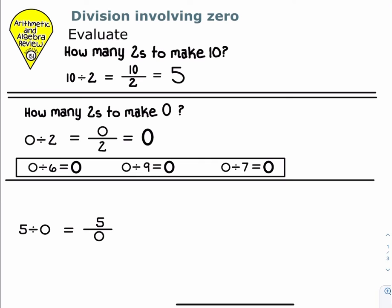Let's reword 5 divided by 0 in the same way. That really says, how many 0's does it take to make a 5?